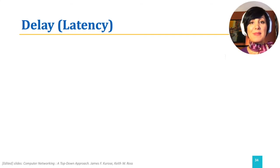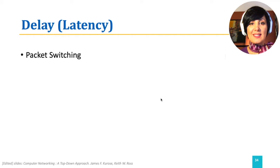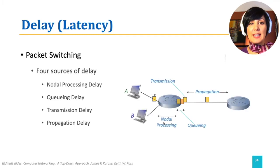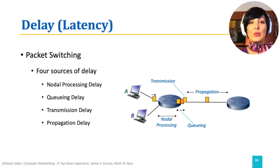Another important performance metric in the network is delay, which is also often referred to as latency. In packet-switched networks, as a packet passes through a series of links and routers from the source to the destination, it may experience several types of delay. We can summarize these delay types as transmission delay, nodal processing delay, queuing delay, and propagation delay.